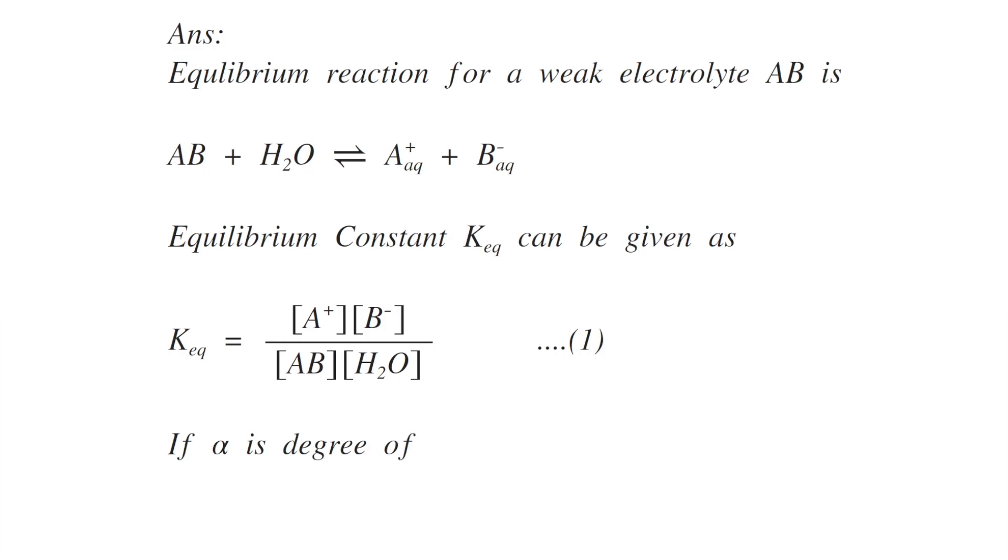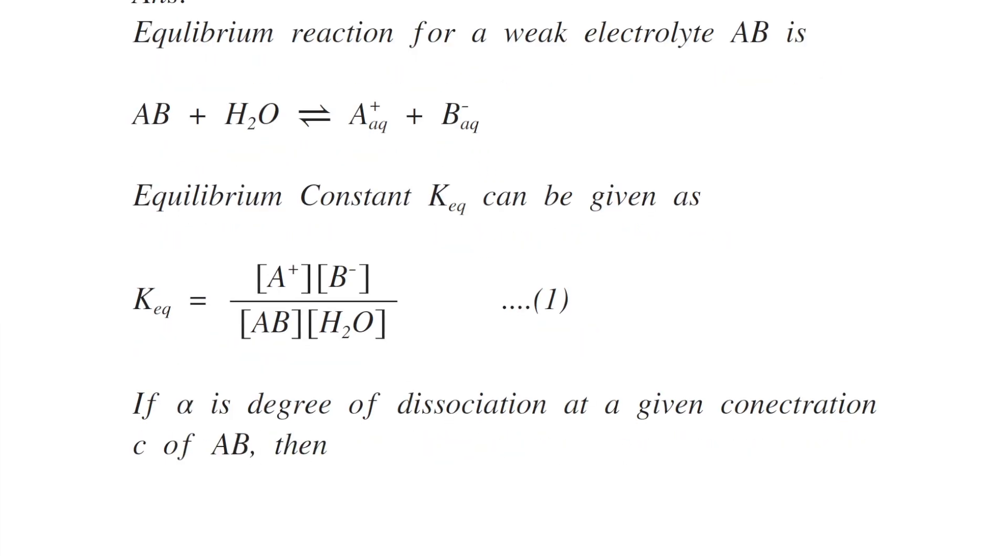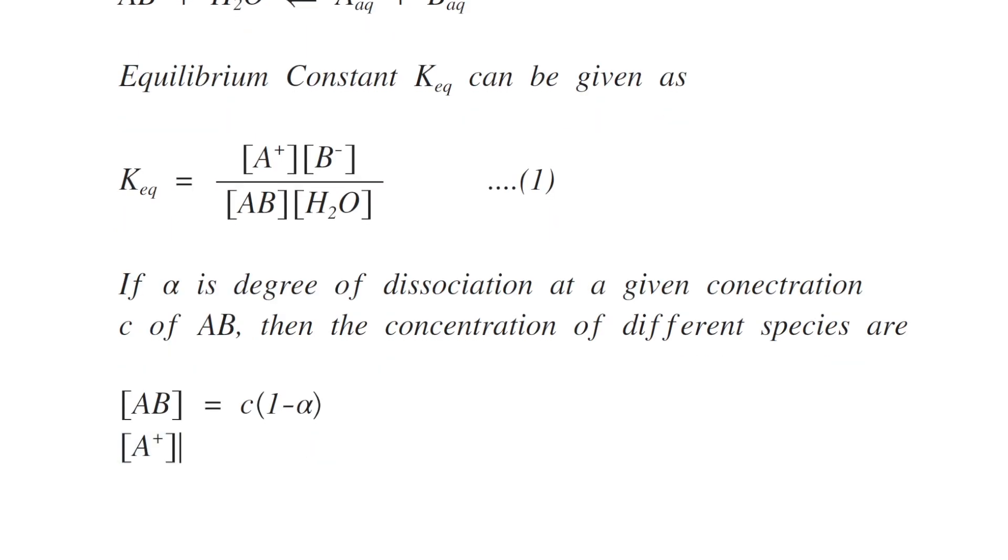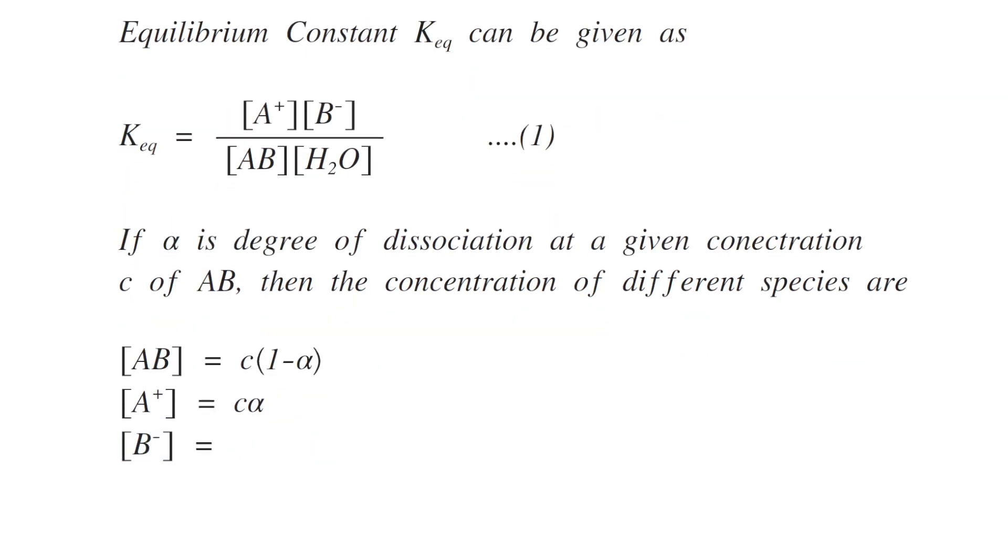If alpha is the degree of dissociation at a given concentration C of AB, then the concentration of different species can be represented as AB will be C(1 minus alpha) while A plus and B minus can be C into alpha.